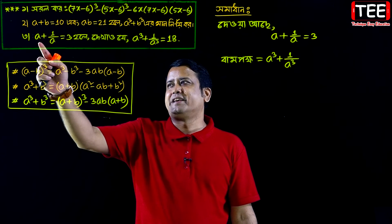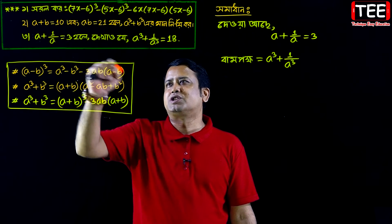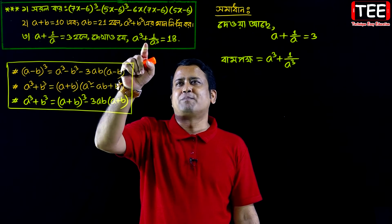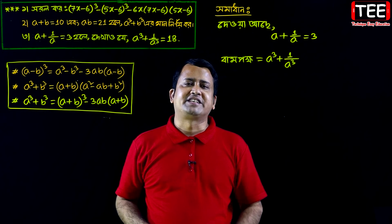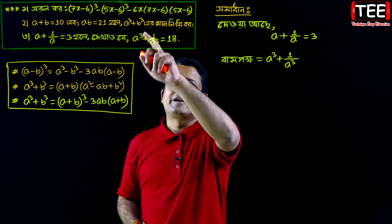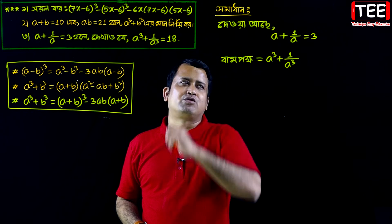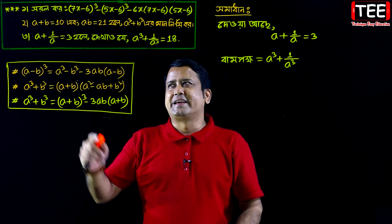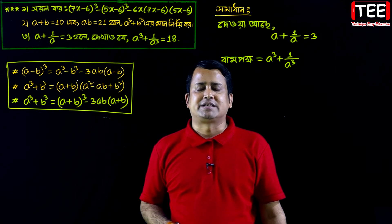Next problem: if a plus 1 by a is equal to 3, then prove that a cube plus 1 by a cube is equal to 18. We are given a plus 1 by a equals 3.